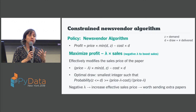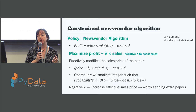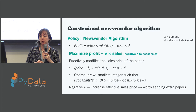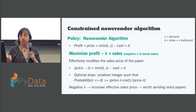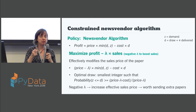We introduce a lambda Lagrange multiplier, which is a negative number, so you're maximizing profit plus some number times sales. If you put this into the equations from a few slides ago with the same kind of math, you find that the optimal draw is the case where the probability of the demand being less than or equal to the draw is greater than (price minus lambda minus cost) over (price minus lambda) — the same functional form as before, but effectively increasing the sales price by negative lambda.